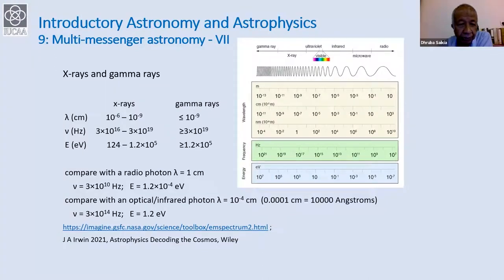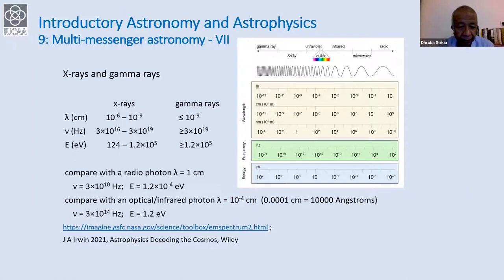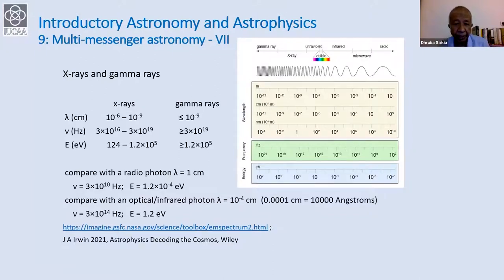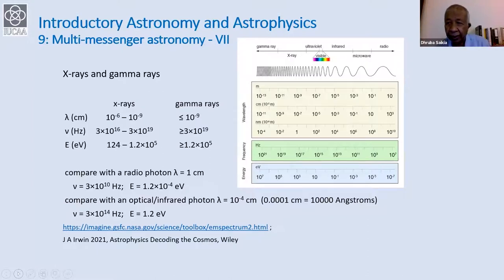We are talking of much more energetic photons than the low energy part of the electromagnetic spectrum. Even in the optical-infrared at about 10 to the power of minus 4 centimeters — about 10,000 angstroms — the energy is about 1.2 electron volts, which is about five orders of magnitude larger than radio. So when you're talking of X-rays and gamma rays, you are talking of photons which are far more energetic. When you detect a source in X-rays and gamma rays, you are basically detecting some of the most energetic or exotic objects in the universe.